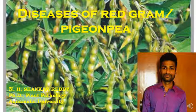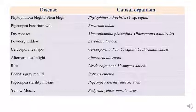Today we are going to discuss diseases of redgram. Redgram is otherwise called as pigeon pea. The scientific name of redgram is Cajanus cajan. My name is N.H. Shankar Reddy and I am doing a PhD in Plant Pathology at Narayanama University.